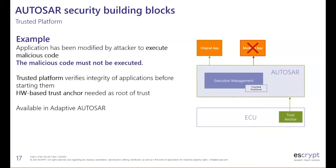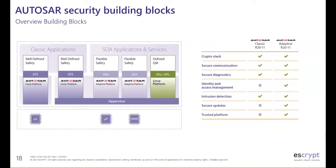To summarize the first part: AUTOSAR is a broadly used standard in the automotive industry, coming in two variants — Classic AUTOSAR for safety and real-time, and Adaptive AUTOSAR for more performance-oriented use cases. Both can coexist on one ECU. We've seen all the security building blocks available in Classic and Adaptive AUTOSAR: most are available on both platforms, but some are limited to one.